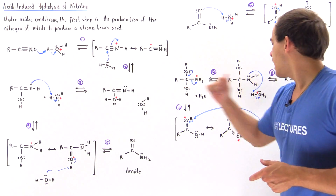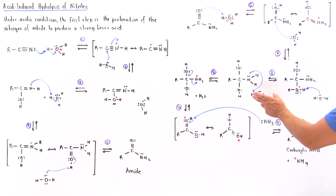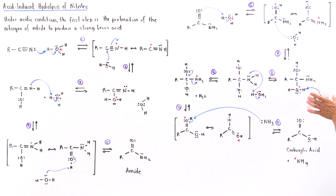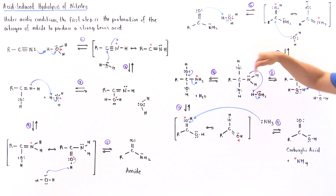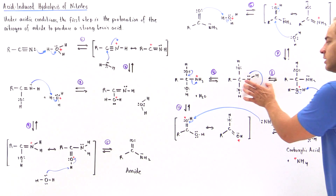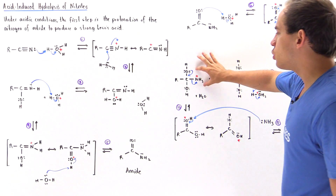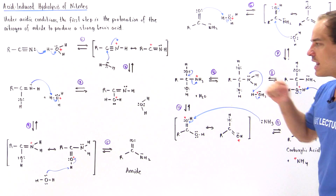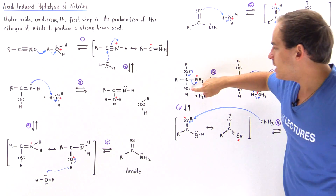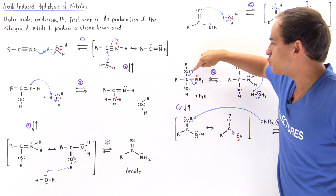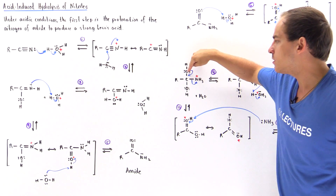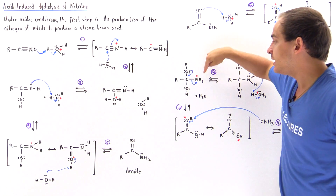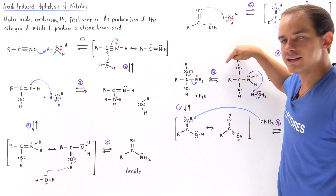In step number nine, the hydronium produced in step number eight protonates this nitrogen to convert a poor leaving group into a good leaving group. In the next step, the electrons create a pi bond between our oxygen and carbon, and this good leaving group is kicked off.